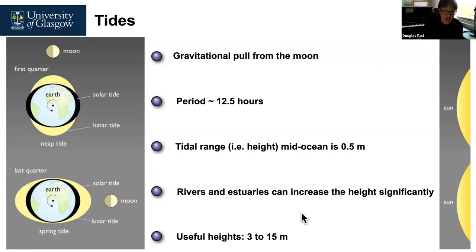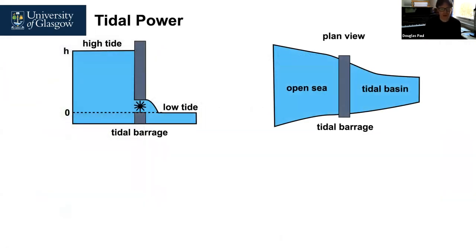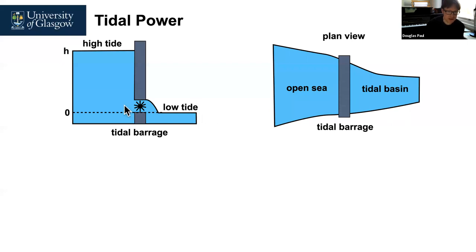I'll show you some examples of places where this is used. The concept is that you put a dam across an estuary or tidal basin. At high tide, the outside will be at a much higher height, and the water will flow through a turbine to the side with low tide, generating electricity in that process. Typically, you have to put a barrage or dam the whole way across a tidal basin or estuary and block it off from the open sea.